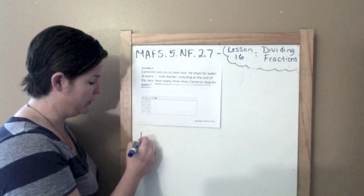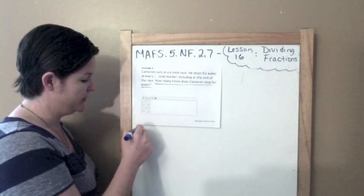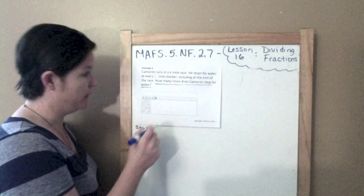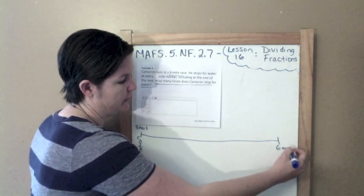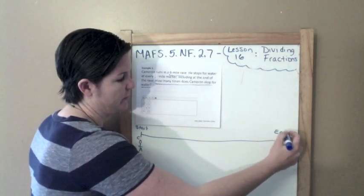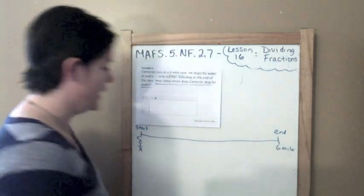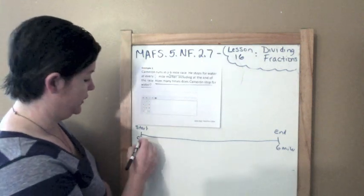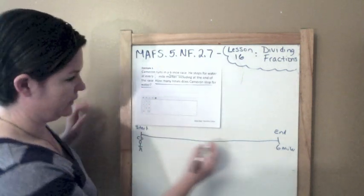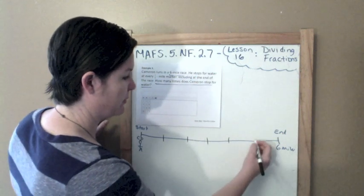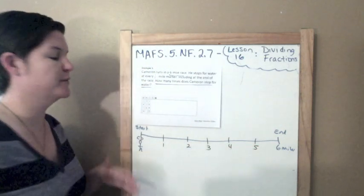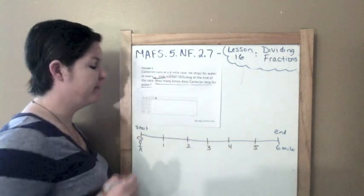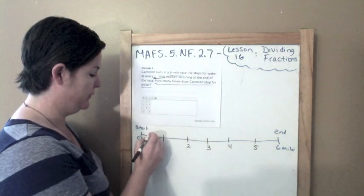Let me draw it out. Here's a little Cameron at the start of the race. The race is six miles long, so there are six miles to the end. He's running in a six-mile race but he stops at every half of a mile. So if this is zero and that's six, let me plug in my miles: one mile, two miles, three miles, four miles, five miles. But he doesn't stop at every mile marker — he stops at every half-mile marker.